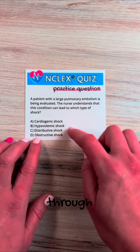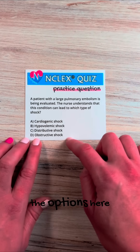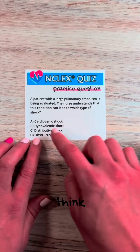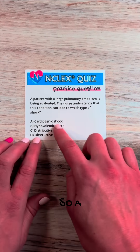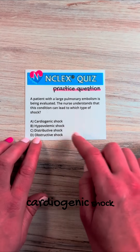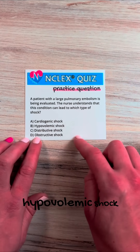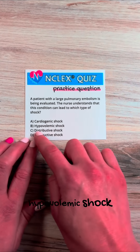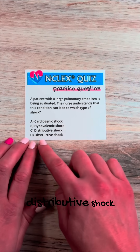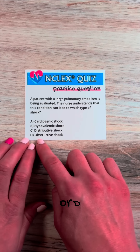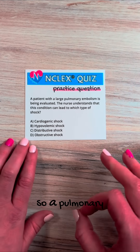Let's go through the options. A, cardiogenic shock; B, hypovolemic shock; C, distributive shock; or D, obstructive shock.